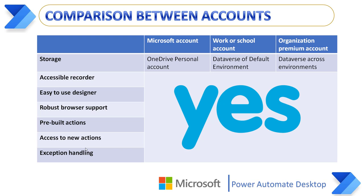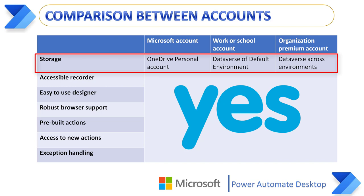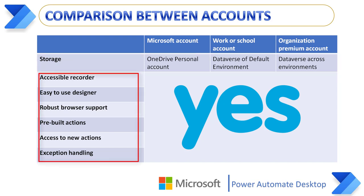The first comparison is storage. For the Microsoft account or personal account, flows will be stored in OneDrive personal account. For the work or school account, flows will be stored in the Dataverse of the default environment. For the organization premium account, flows will also be stored in the Dataverse of the default environment — wherever you create a flow in a particular environment, it will be stored in Dataverse.